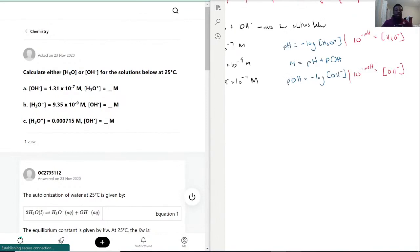For the first question we have 1.31 times 10 to the negative 7 moles of OH-. They want us to find H3O+. To do that we first find the pOH using negative log of 1.31 times 10 to the negative 7, and we get a pOH of 6.88.